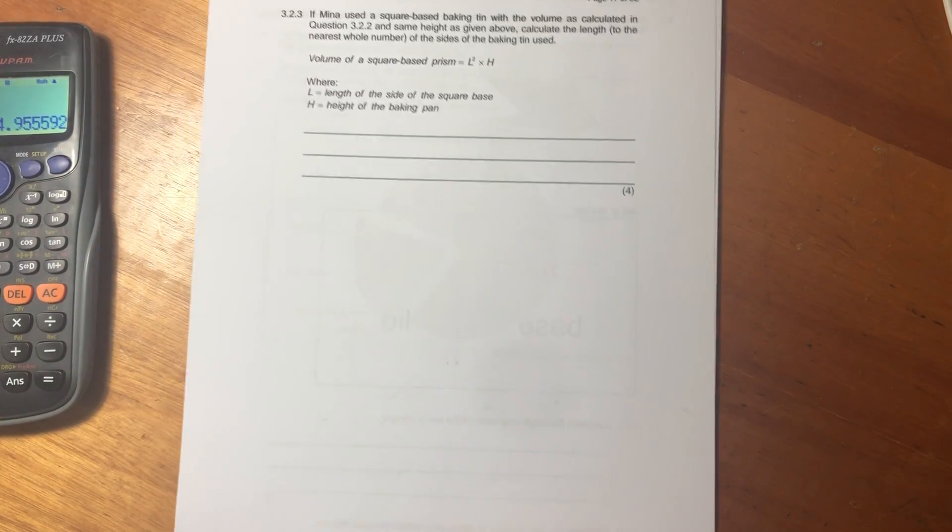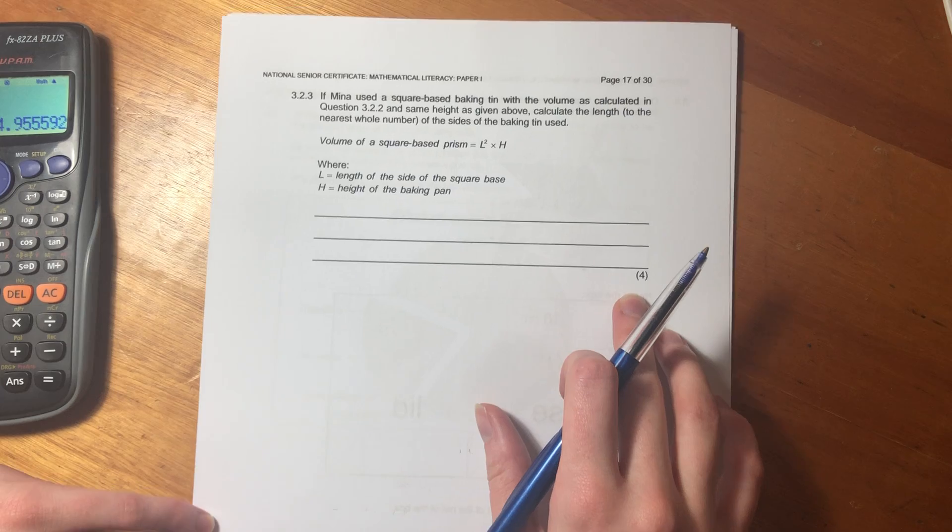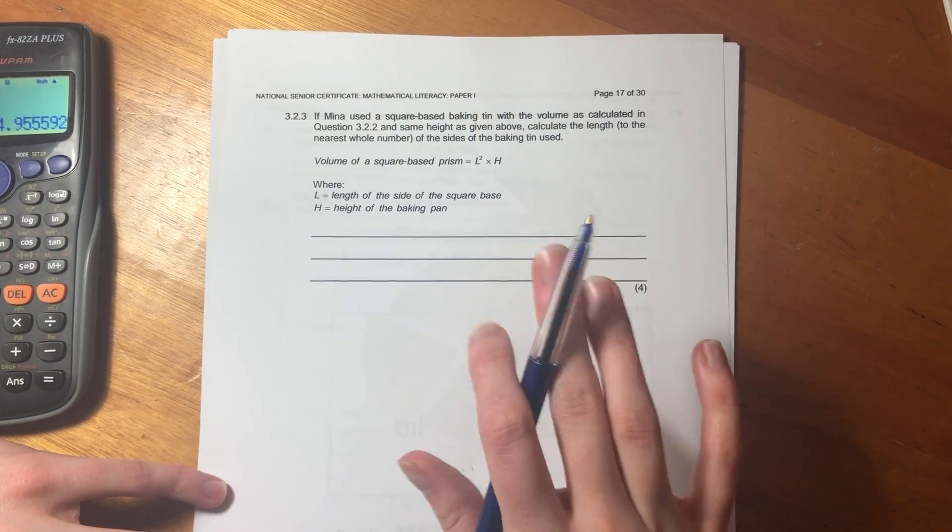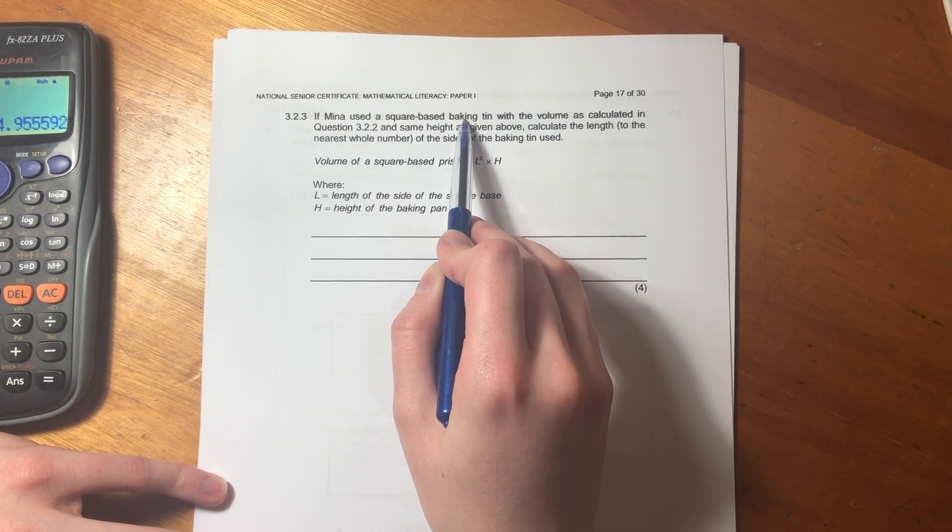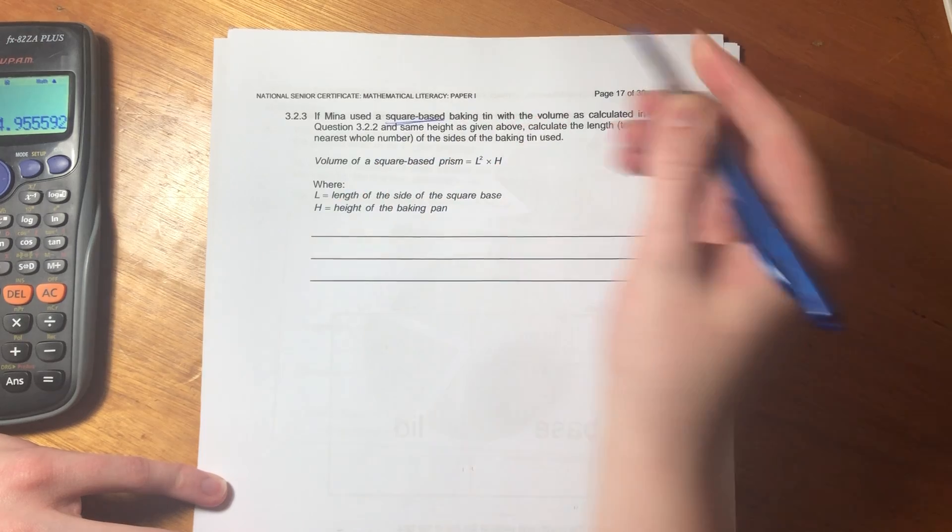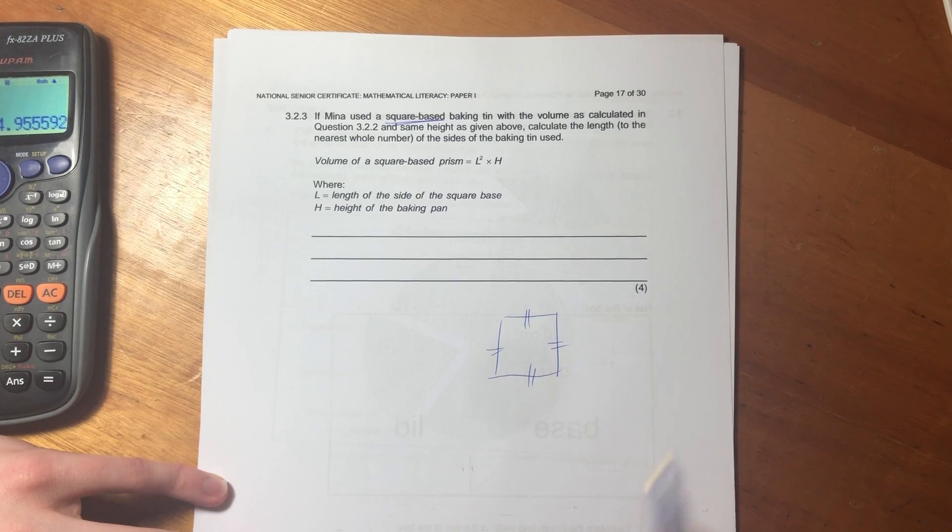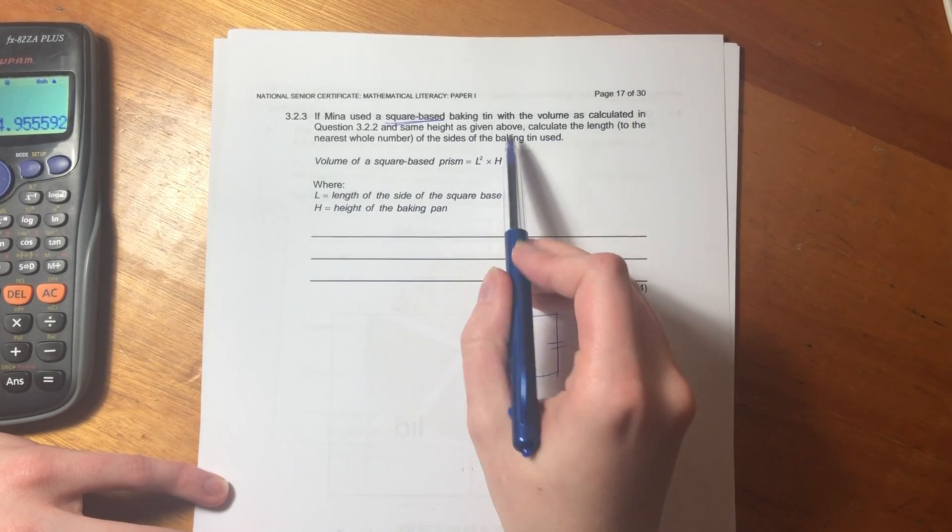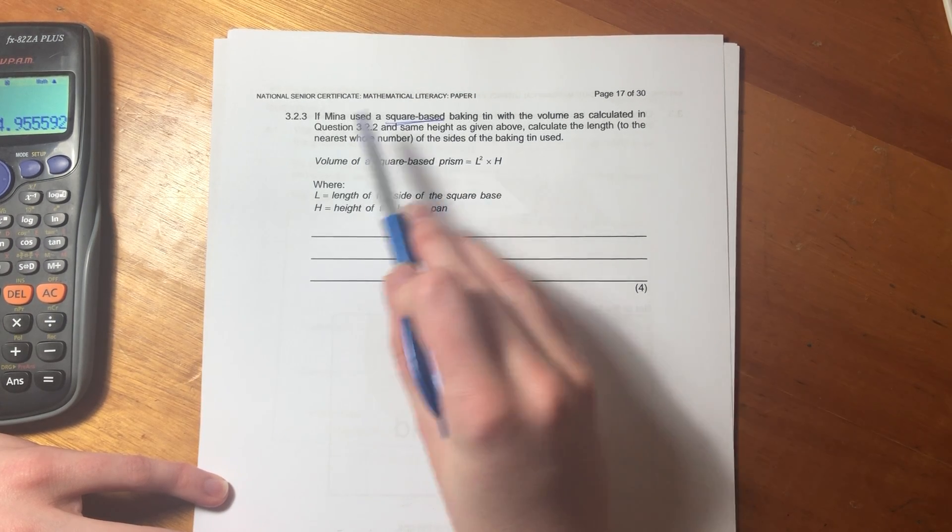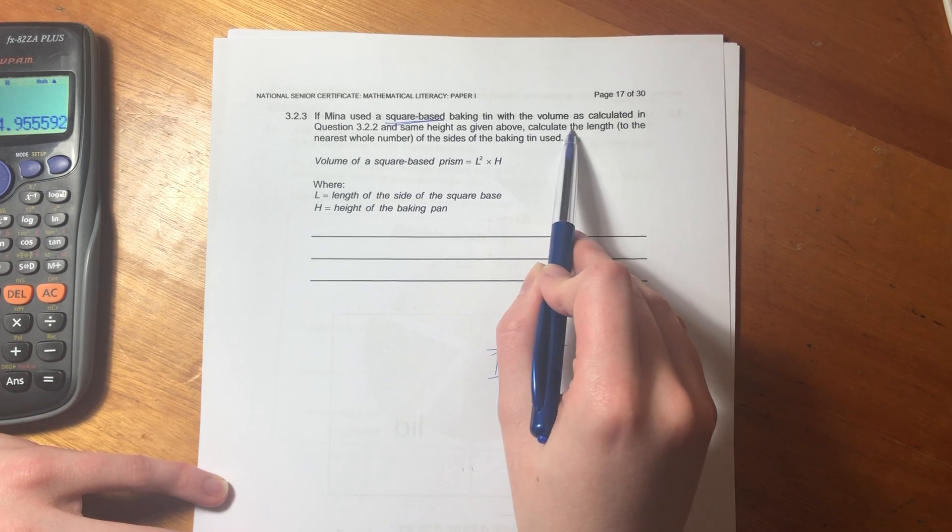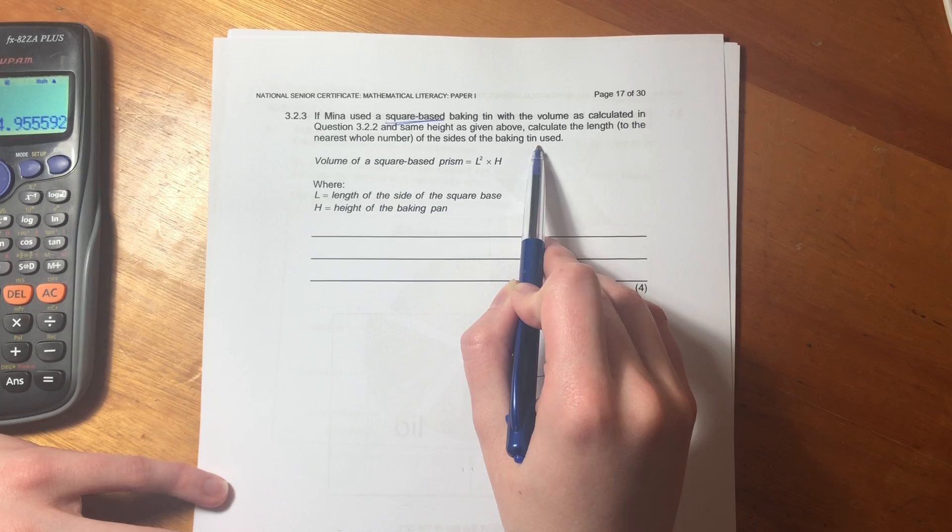Let's now move on to our last question over here. So this is for four marks, guys. So it's quite a lot of marks, but we're not going to panic. We're just going to jump in. If Mina used a square-based baking tin - so that's important, squares remember? Squares, you draw them like this and they have equal sides. Very important, all sides are equal. With the volume as calculated in question 3.2.2, so it is the same volume and the same height as given above. Calculate the length to the nearest whole number of the sides of the baking tin used.